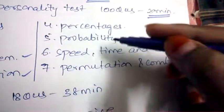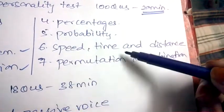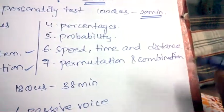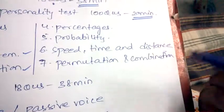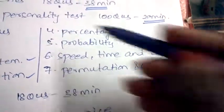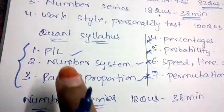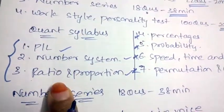Whereas from percentages, probability, speed time and distance, and permutations and combinations, even little advanced questions or more hard questions may appear. So concentrate more on these four topics. You need to concentrate on the basics too, but only basics will be asked from those.